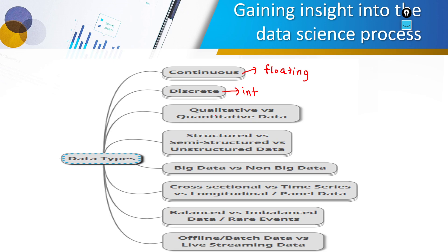We also have data in structured, semi-structured, or unstructured form. Structured data is in rows and columns — tabular data — and we use SQL for it. For semi-structured data we have XML and JSON. For unstructured data, we use databases like MongoDB. Next is big data versus non-big data — we consider three V's: volume, velocity, and variety. Non-big data is when we have a very small amount of data to train our model.